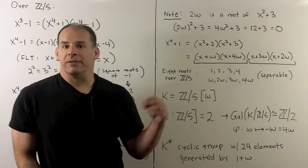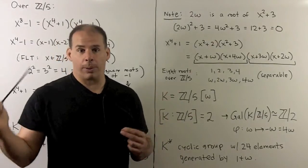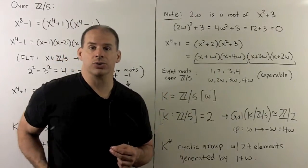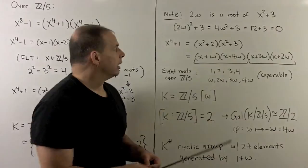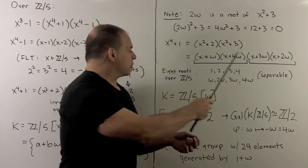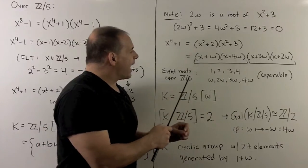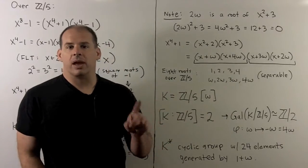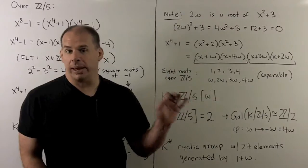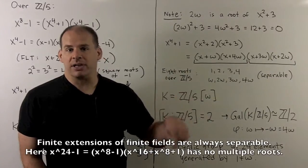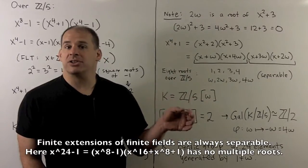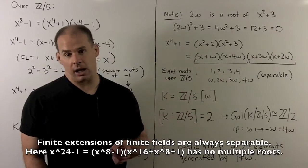So that means we, in fact, have the splitting field for our polynomial as follows. Now, that gives our full factorization. We see that the 8th roots over Z mod 5 are going to be 1, 2, 3, 4, and then 1, 2, 3, 4, each times ω. So that means we have a separable extension, and it makes sense to talk about the Galois group of this polynomial.